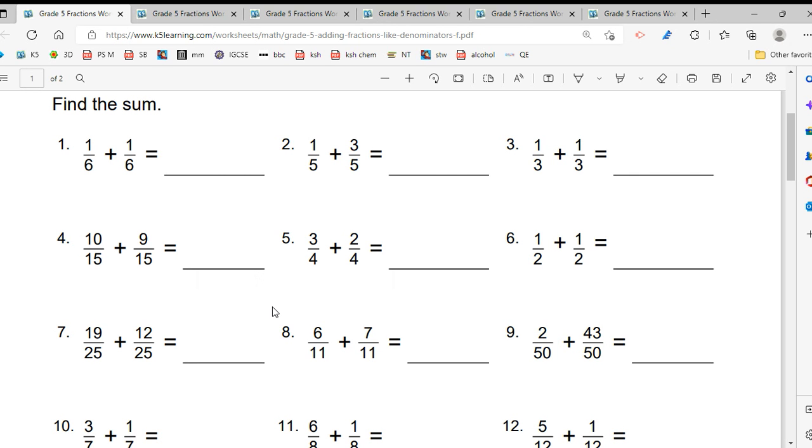In a fraction, when the denominators are the same, jaise yahaan pe denominator is 6, when the denominators are the same and you have to add the fraction, what you'll do is you will add the numerator and forget about the denominator, it will be the same. So it will be 2 upon 6.